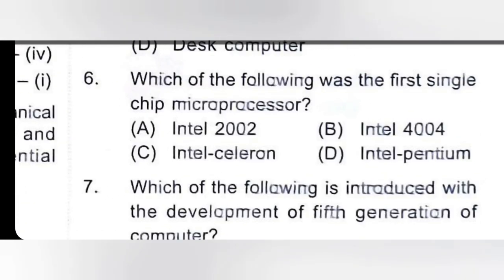Which of the following was the first single-chip microprocessor? A microprocessor is an electronic device which is a binary system that works on 1 and 0. If we fabricate a single CPU, that is called a microprocessor. The first chip microprocessor introduced by Intel was the Intel 4004, and this is a 4-bit microprocessor.